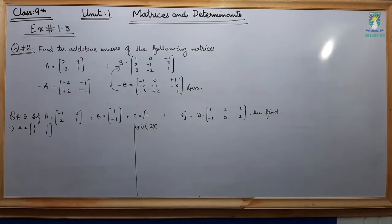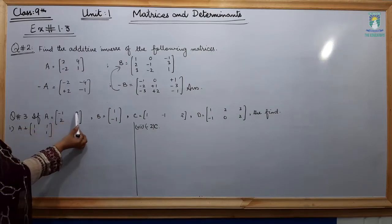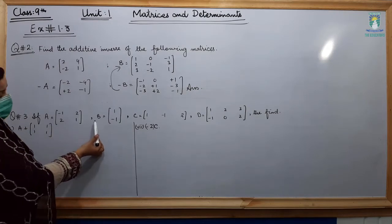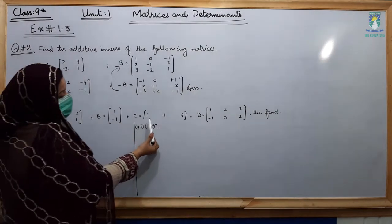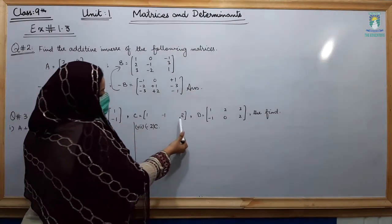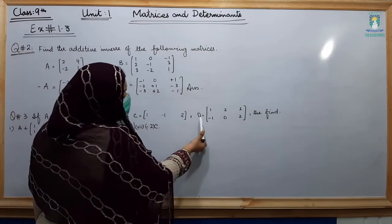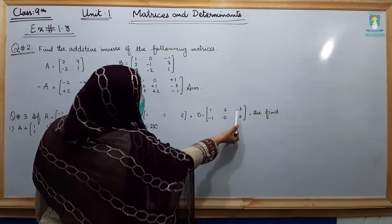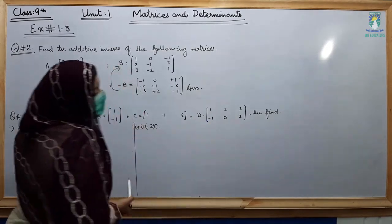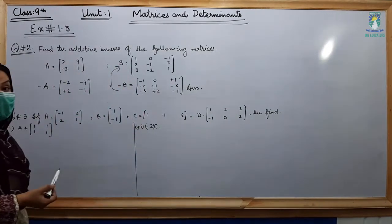Now students, in question number 3: if A equals [minus 1, 2; 2, 1], B equals [1, minus 1], C equals [1, minus 1; 2], and D equals [1, minus 1; 2, 0; 3, 2], then find the following parts.